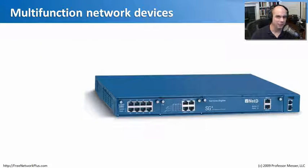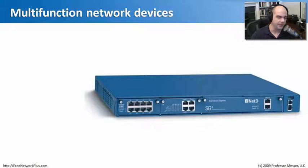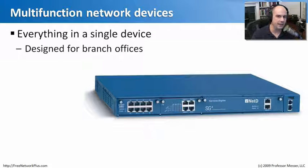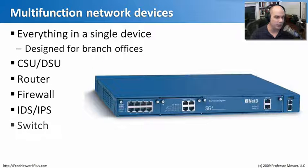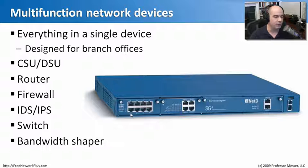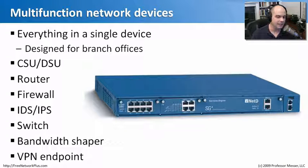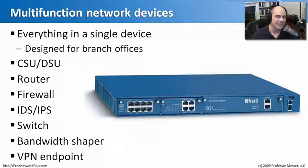At a branch office there may not be room for separate devices, and you may not need much bandwidth but still need many capabilities. So in networking we have multi-function network devices — everything in a single device. Inside one unit you can have a CSU/DSU, a router, a firewall, IDS/IPS, switching capabilities with switch ports on the front, bandwidth shaping, and even VPN endpoint functionality to encrypt traffic back to the home office. These are perfect for small branch offices that need a little bit of many capabilities in a tiny footprint.